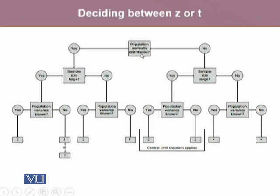The other case is if the population is not normally distributed. The first question we ask is: is the sample size large? If the sample size is large, whether the population variance is known or unknown, we use Z distribution, where we take help from the central limit theorem — that for a large sample, the distribution of X-bar approaches the standard normal.